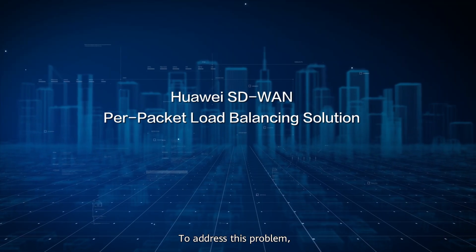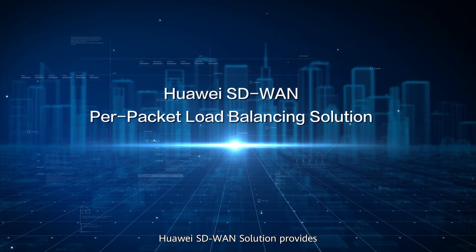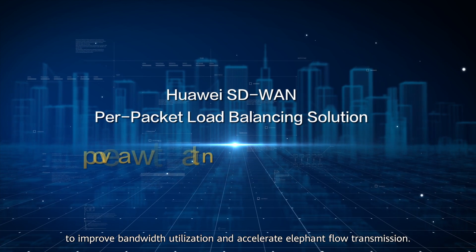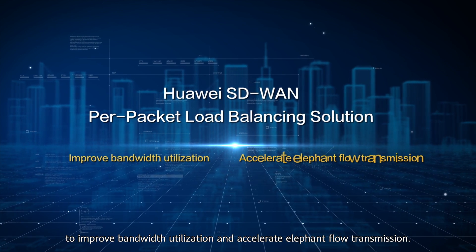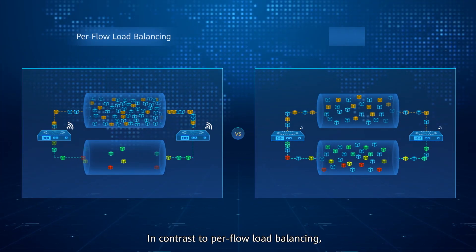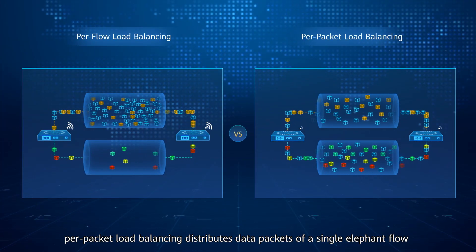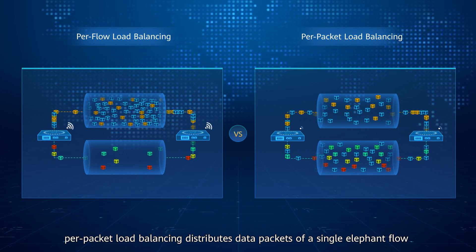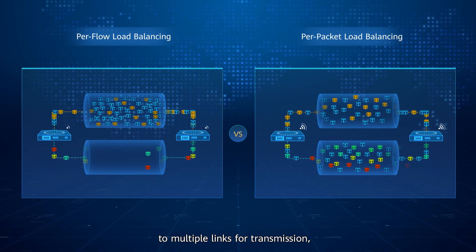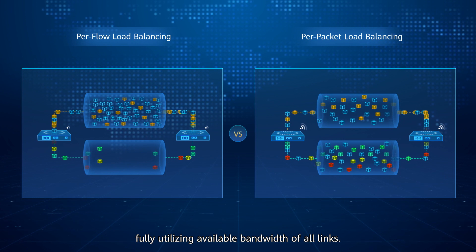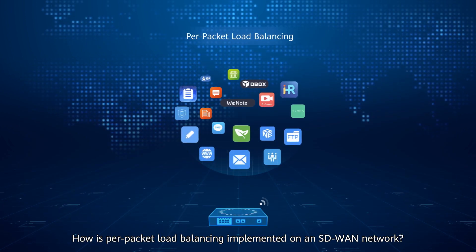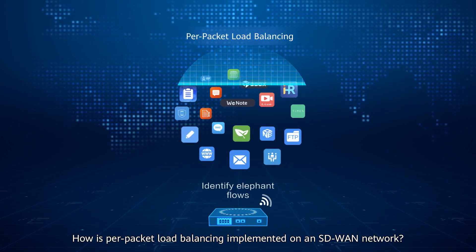To address this problem, Huawei SD-WAN solution provides the per-packet load balancing solution to improve bandwidth utilization and accelerate elephant flow transmission. In contrast to per-flow load balancing, per-packet load balancing distributes data packets of a single elephant flow to multiple links for transmission, fully utilizing available bandwidth of all links.